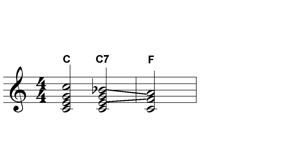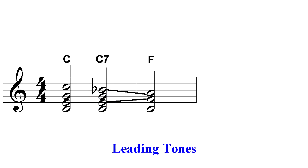Both the B flat and E notes are called leading tones. The C note at the bottom of each chord is also part of the structure, providing a commonality for all three chords that helps bind them together. This is another example of changing chords while the bass note stays the same, as mentioned earlier.